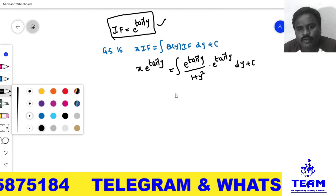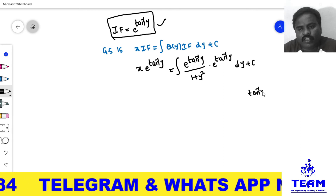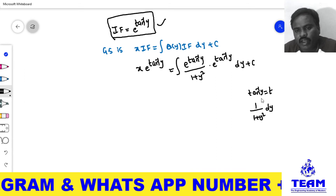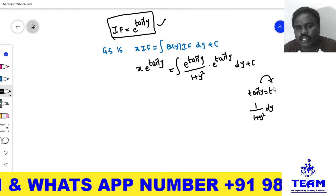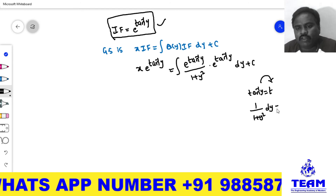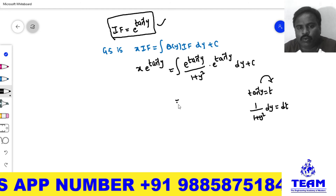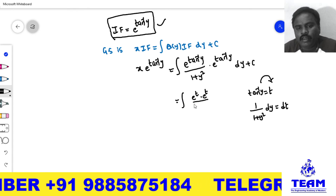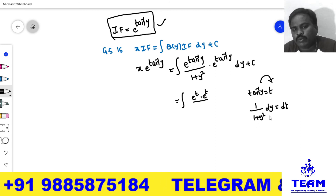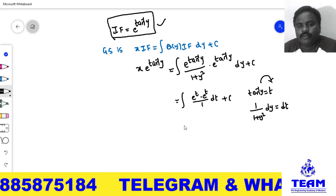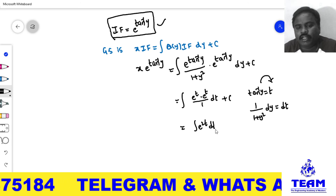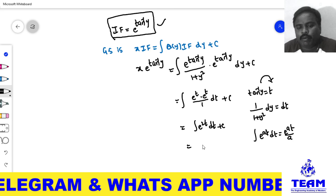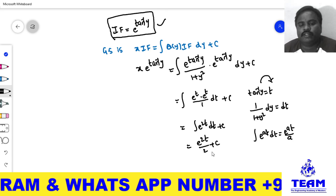To simplify, let t = tan⁻¹y. Then the derivative gives dt = 1/(1 + y²) dy. Substituting into the integral, e^(tan⁻¹y) becomes e^t, and the remaining 1/(1 + y²) dy becomes dt. So the integral becomes ∫ e^t · e^t dt = ∫ e^(2t) dt. Using the formula ∫ e^(at) dt = e^(at)/a, we get e^(2t)/2 + c.